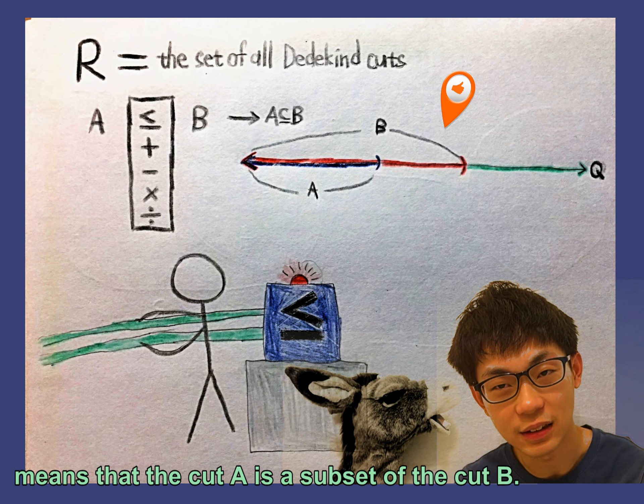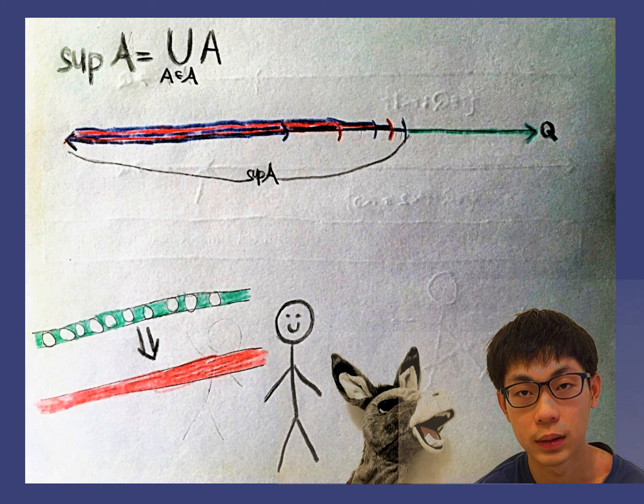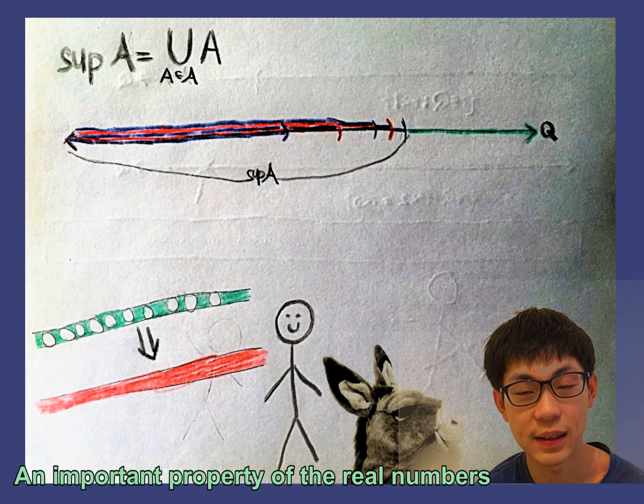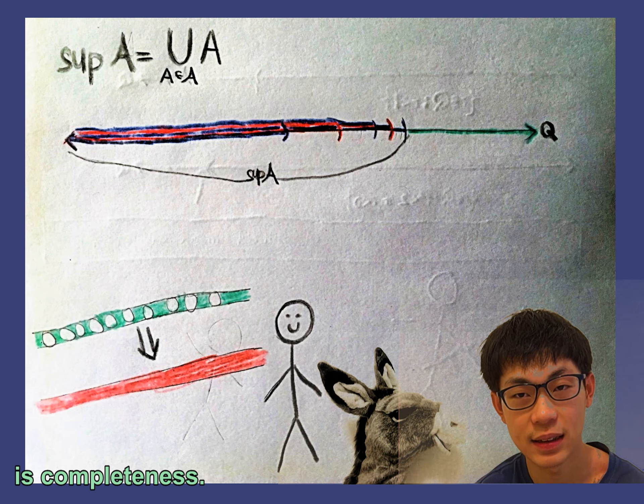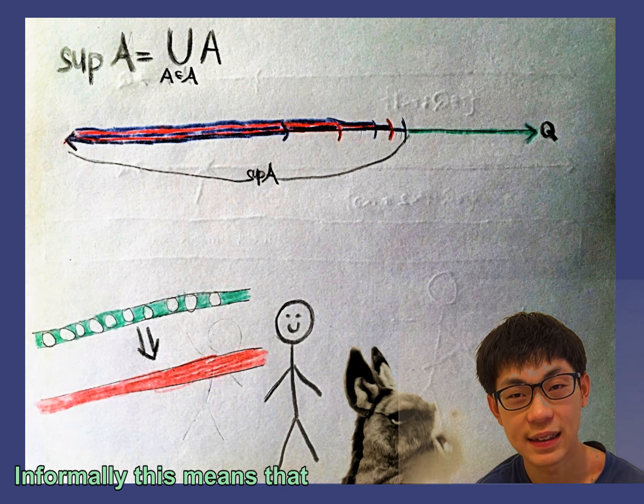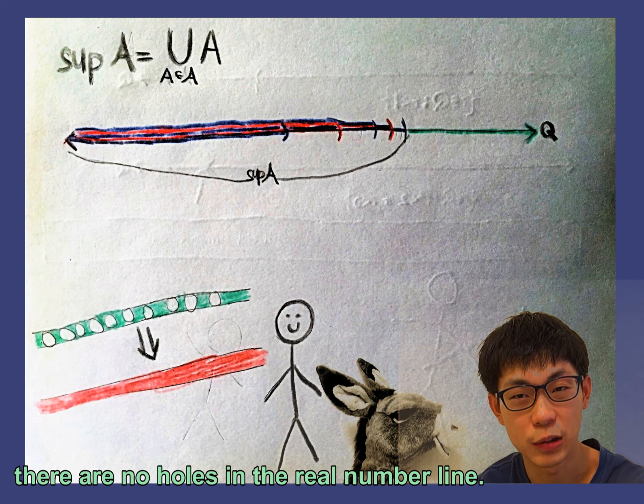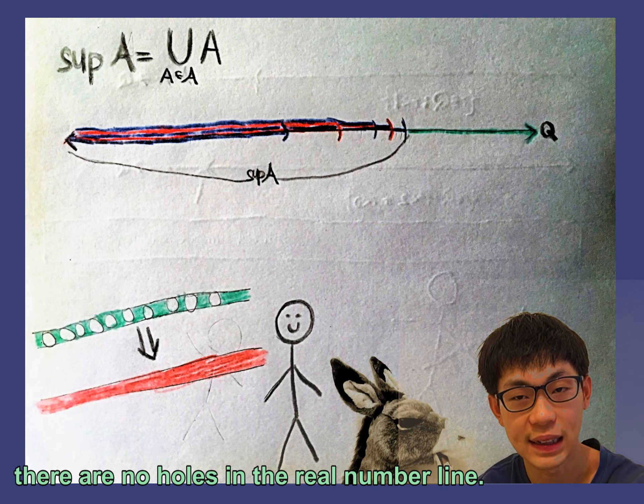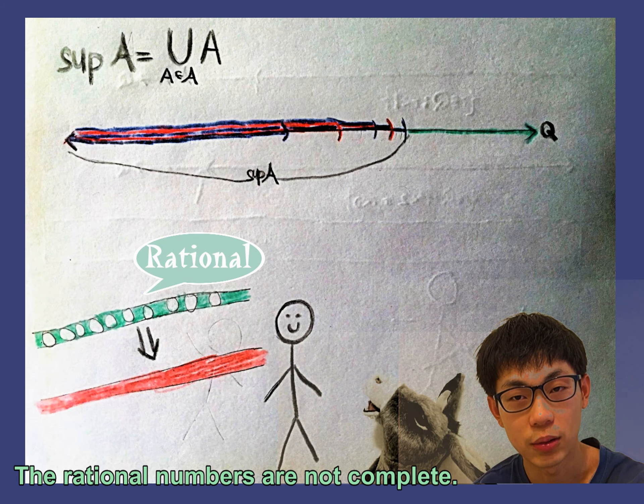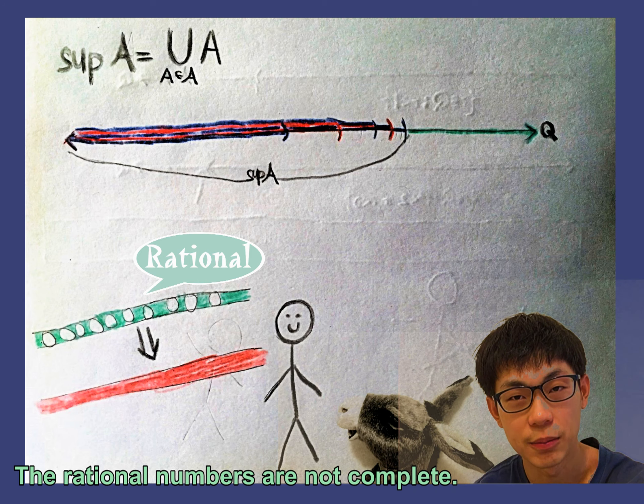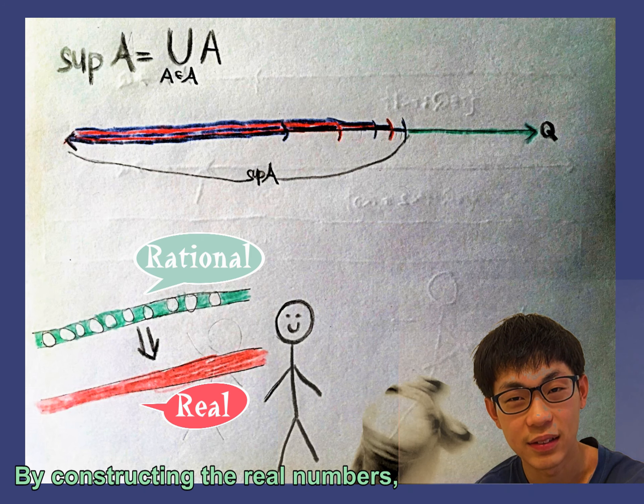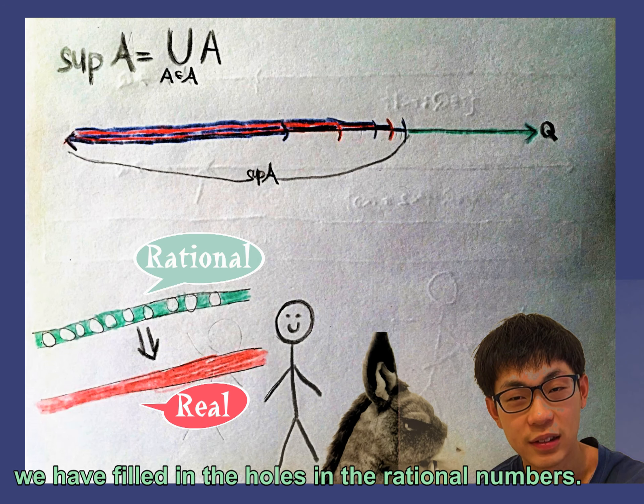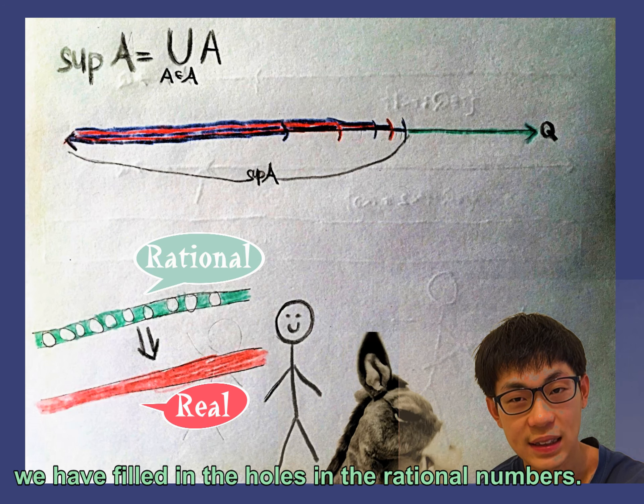What is completeness? An important property of the real numbers is completeness. Informally, this means that there are no holes in the real number line. The rational numbers are not complete. By constructing the real numbers, we have filled in the holes in the rational numbers.